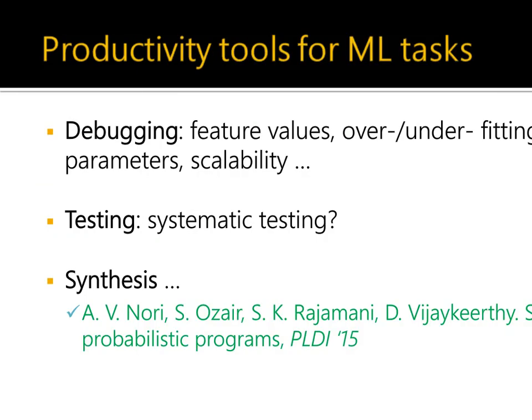In summary, there is a huge opportunity for building productivity tools for machine learning tasks. I've shown how probabilistic programming can be used for debugging errors in the data. There are several other ways machine learning tasks can produce incorrect results — errors in feature values, over- and under-fitting issues, incorrect parameters, and so on. It would also be interesting to perform systematic testing for machine learning tasks. Another opportunity for tools is to automatically synthesize probabilistic programs, which is the next topic.